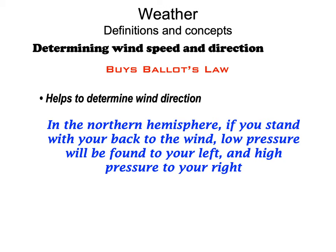This brings us to Buys Ballot's Law — Buys Ballot was a Dutch meteorologist. His law states: in the northern hemisphere, if you stand with your back to the wind, low pressure will be found to your left and high pressure to your right. At the time this was discovered, there were no weather charts, not all ships had barometers, and those that did were very expensive. So this was actually a fairly fundamental discovery. You can still use it today to determine where lower pressure is relative to your boat by knowing the wind direction.